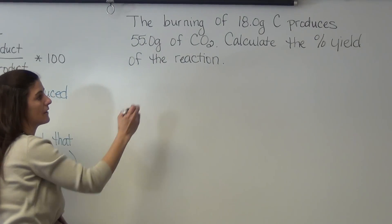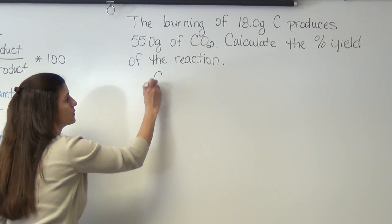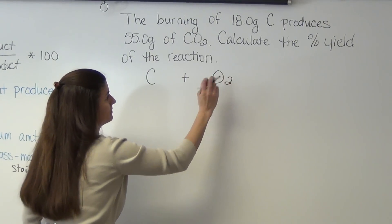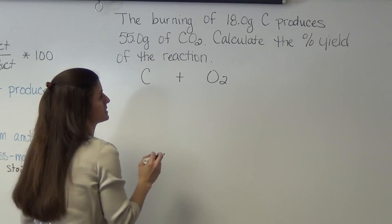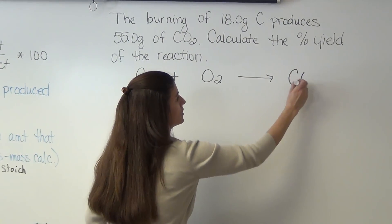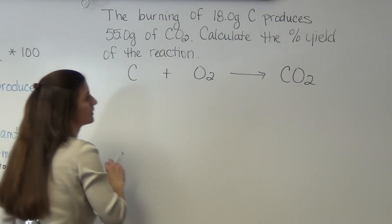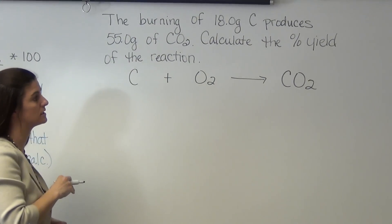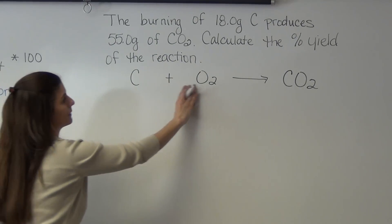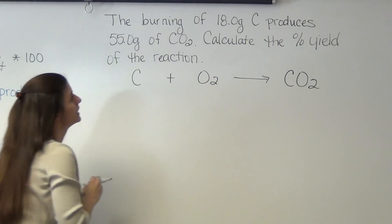So our first thing is we're going to have to write a balanced equation. So we have carbon reacting with oxygen. It's O2 because it's a diatomic element. And it's telling us that we're going to produce carbon dioxide. We can look and see that it's balanced, so we don't have to use any coefficients. So all of these are one mole.